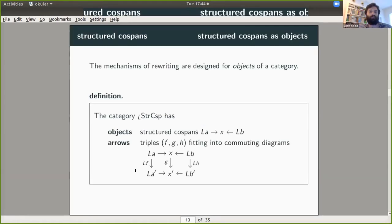So that's structured cospans as arrows, but they also need to be objects if we want to talk about rewriting. Right. Why? Well, because the mechanisms of rewriting theory are designed for objects of a category, not arrows. And so we can define this new category of L structured cospans. And so the objects now are these structured cospans and the arrows are kind of the obvious thing, right? They're these triples that fit into these commuting diagrams.